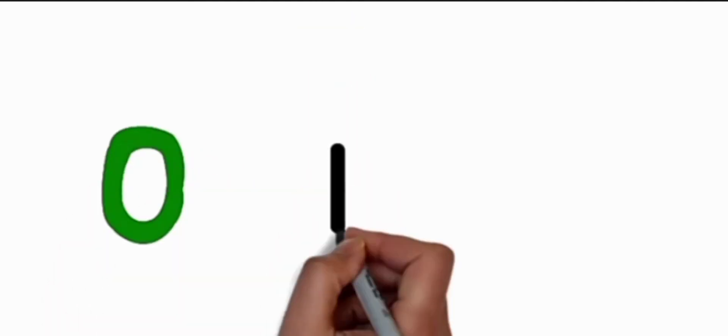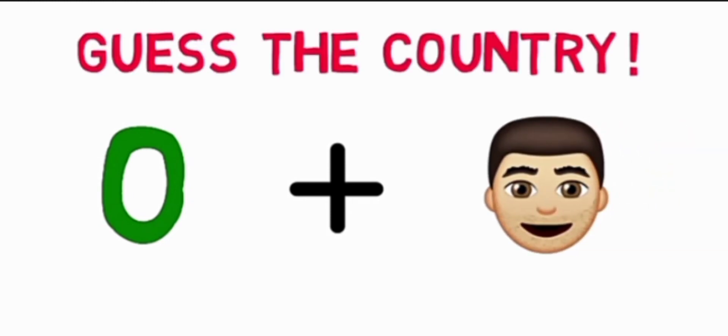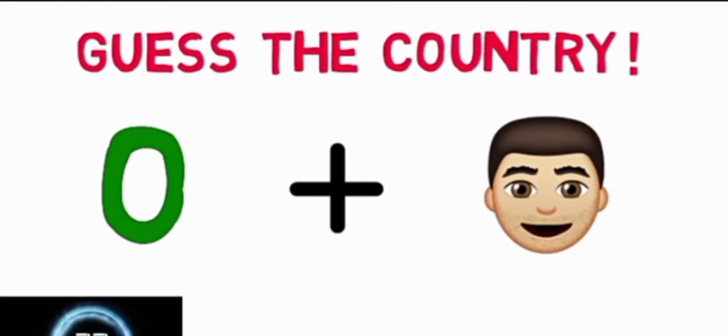Number six is letter O plus a man or a boy, but I don't think... okay, he is a boy, he seems like a man. So this country is Oman. This is also new for many of us, so that's interesting.